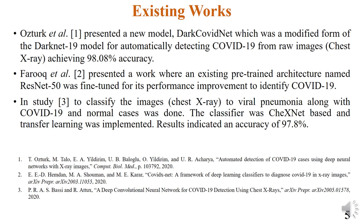In the existing literature, Osterk et al. presented a DarkNet-based model for detecting COVID-19 cases, achieving around 98.08 percent accuracy. Farooq et al. presented a ResNet-50-based model which performed well in detecting COVID-19 cases, and in another study a ChestNet-based model was implemented which resulted in 97.8 percent accuracy.